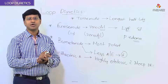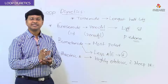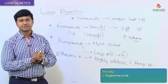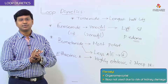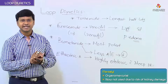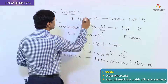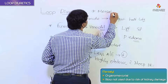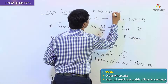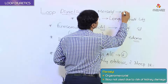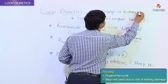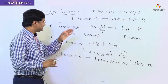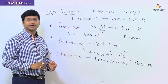Mersalyl is another loop diuretic — it is an organomercurial. It is not used nowadays due to the risk of kidney damage. So mersalyl is also a loop diuretic but is no longer in use because of the risk of kidney damage.